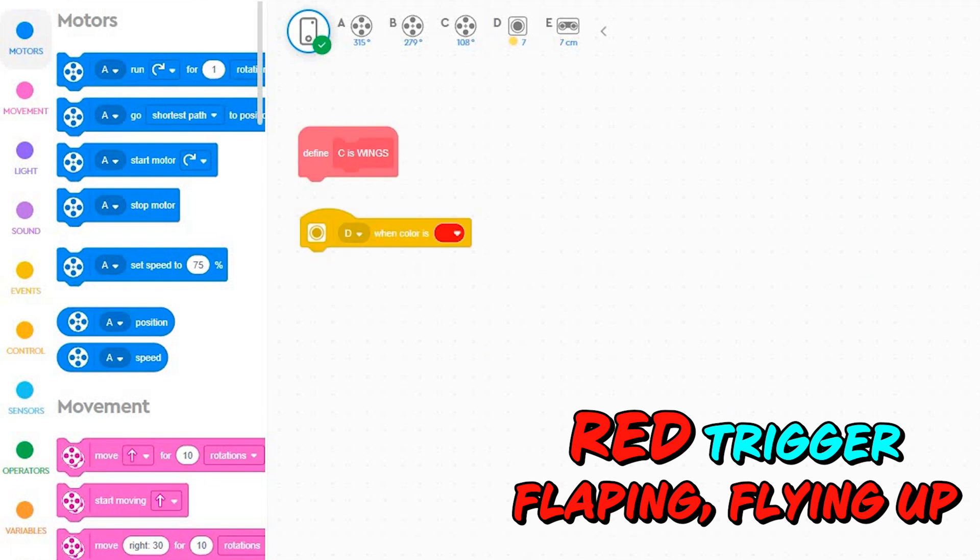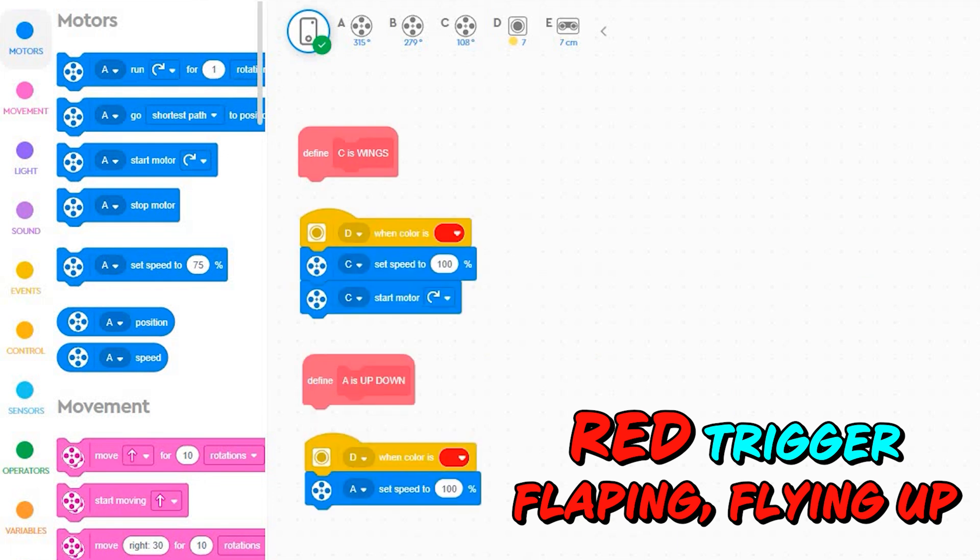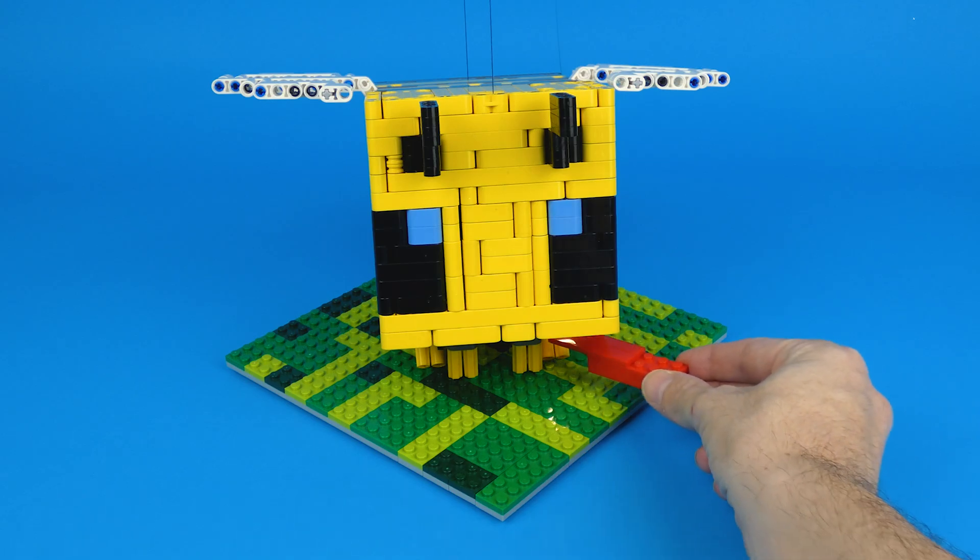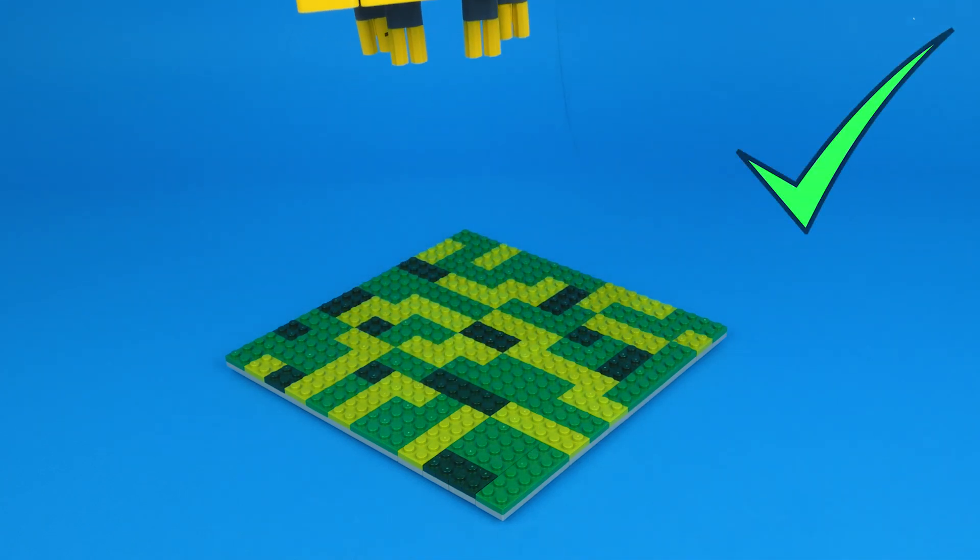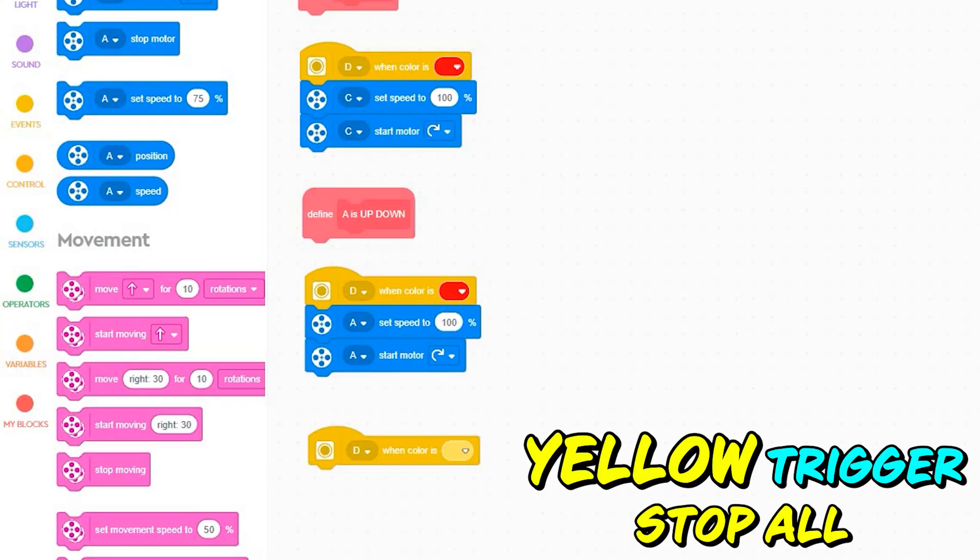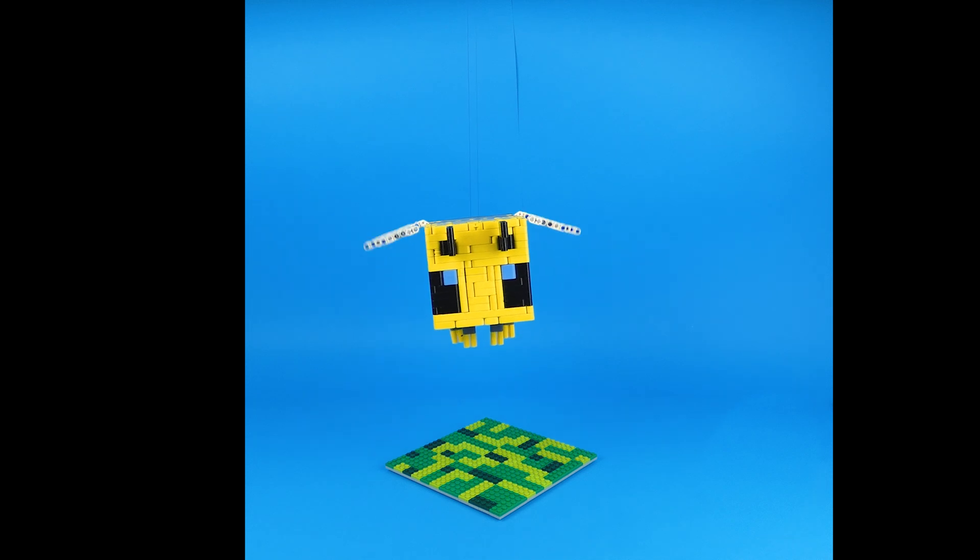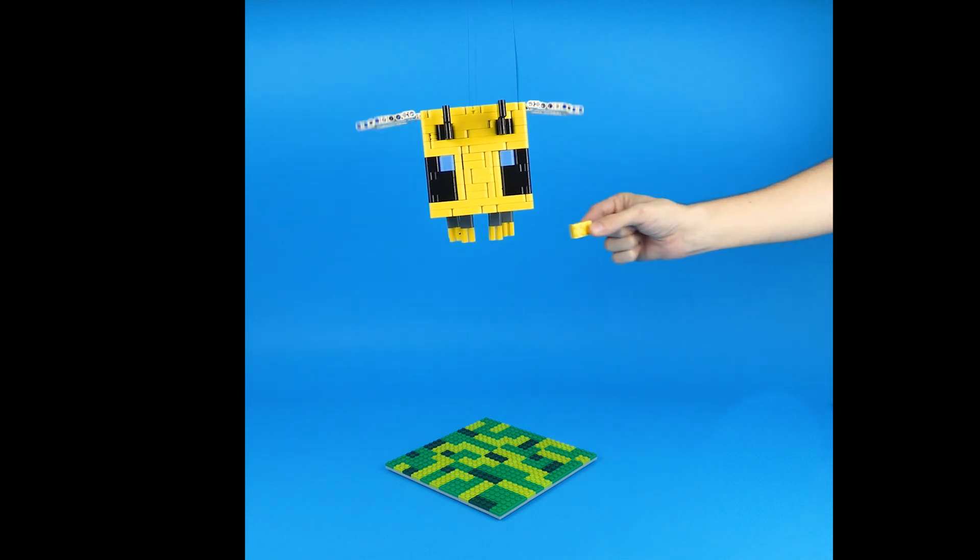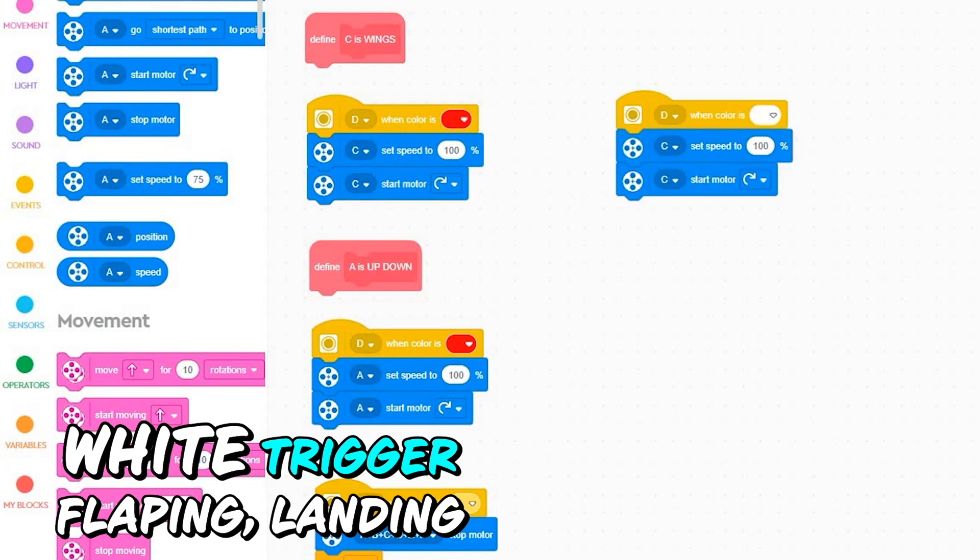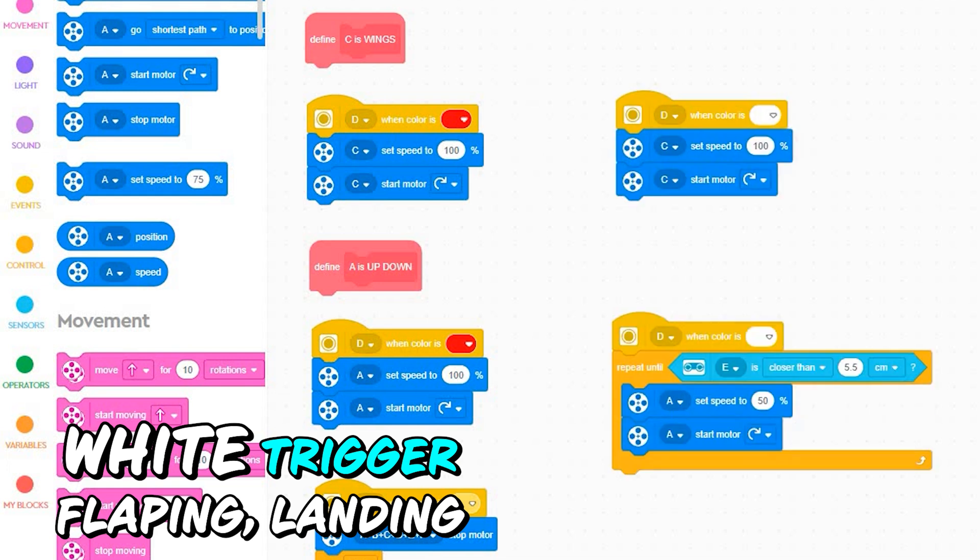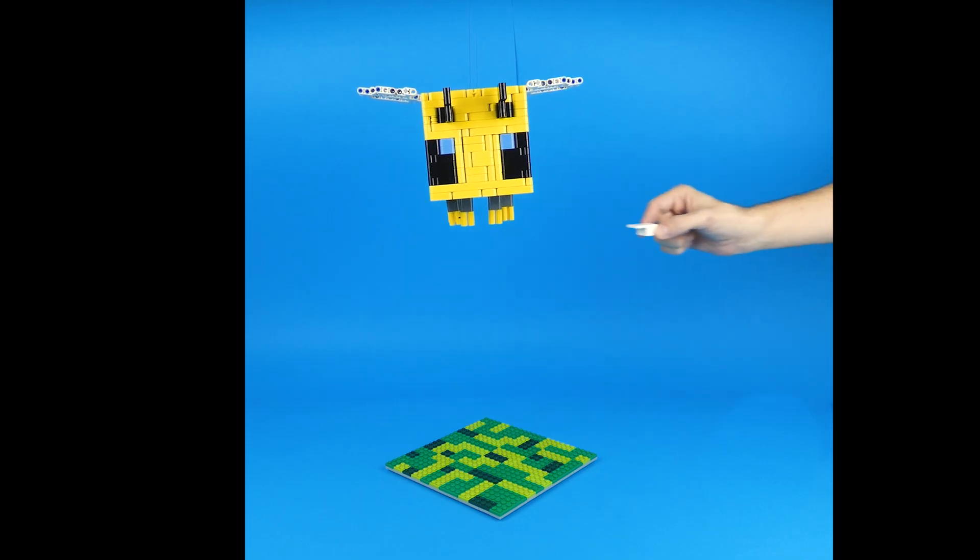When the bee sees red, it must start flapping wings and flying up. Yellow must stop everything. When white, start flapping wings and go for a landing, by measuring distance to the ground.